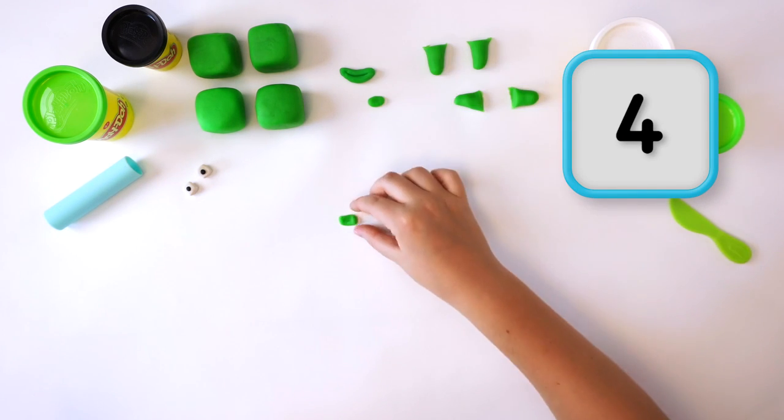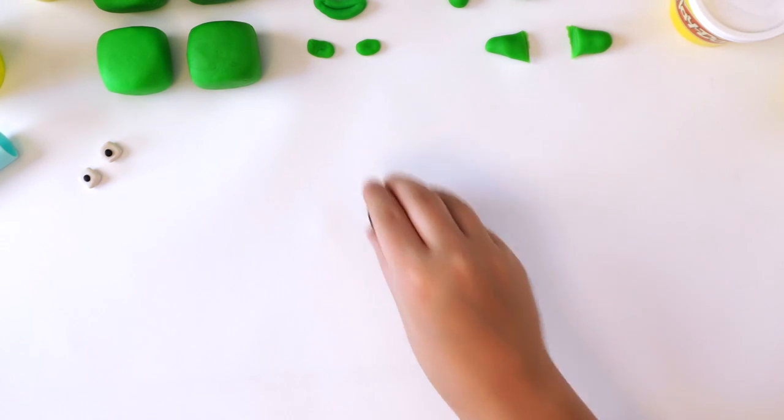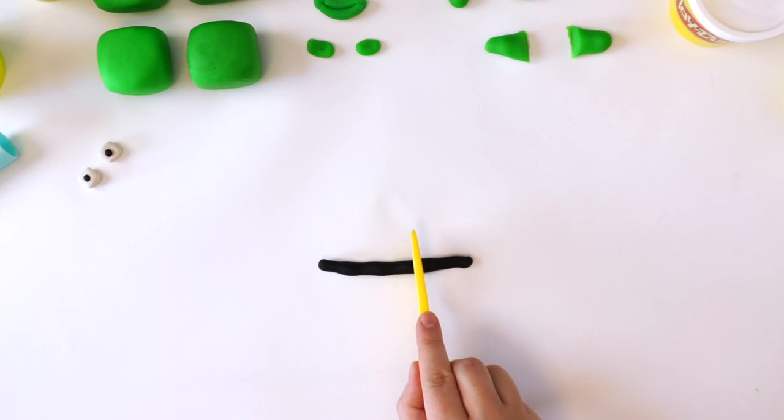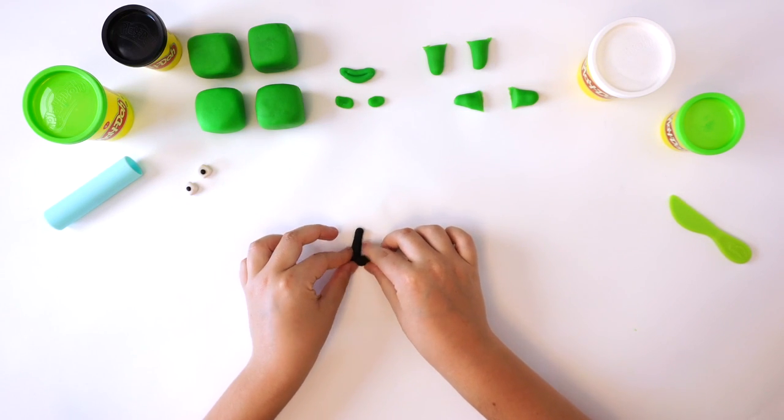Finally, we need the numberling. Roll a small piece of black Play-Doh compound into a small snake for numberling four. Cut the snake in half and bend it round until it looks like this.